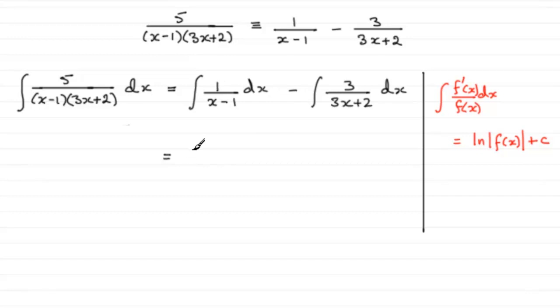then for the first one, it becomes the natural log of just the denominator, the mod of x minus 1. And then for this second term, it's going to be minus the natural log of the mod of 3x plus 2. And don't forget the constant of integration, which I'm going to call plus c.